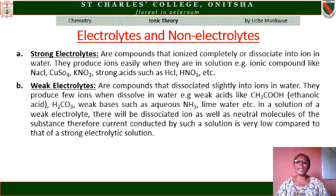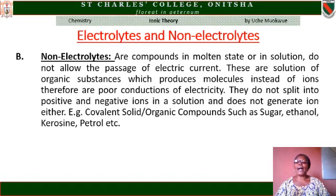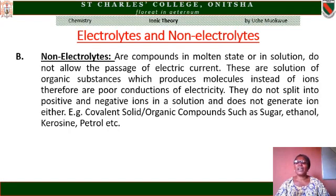In a solution of a weak electrolyte, there will be dissociated ions as well as neutral molecules of the substance. Therefore, the current conducted by such a solution is very low compared to that of a strong electrolytic solution. Non-electrolytes are compounds that in molten or in solution do not allow electric current to pass through them. They are solutions of organic substances which produce molecules instead of ions. Therefore, they are poor conductors of electricity. They do not split into positive and negative ions in a solution and do not generate ions either. Examples are covalent solids like sugar, ethanol, kerosene, and petrol.